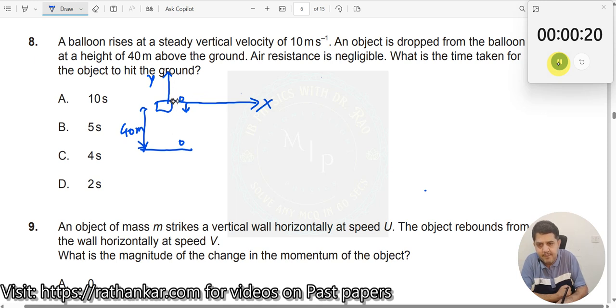Since I am dropping the object from here, this already has a velocity of 10 meter per second. This object will take up this velocity. For example, you are going in a bus holding the handle. As the bus is moving, let's say you jump from the bus when the bus is in running condition.